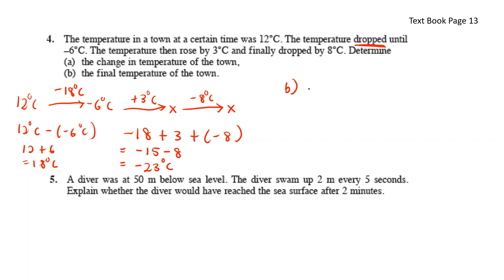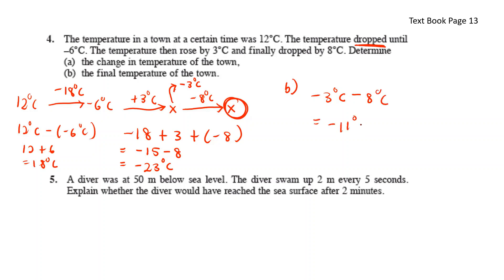For part B — the final temperature: starting from negative 6°C, plus 3°C gives negative 3°C. Then minus 8°C gives negative 11°C. So the final temperature of the town is negative 11°C.